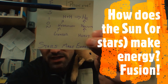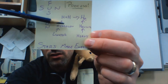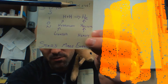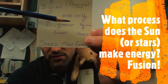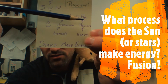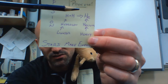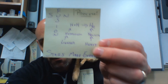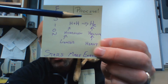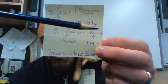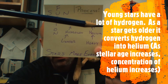Any questions that talk about what process forms energy in the Sun, or the process of lighter elements turning into heavier elements — that's fusion. This is the star fuel and helium is the product. Anything with 'process' and 'the Sun' or 'process' and 'a star' — that's what they're talking about. As stars get older they'll have more helium and less hydrogen; younger stars have more hydrogen and less helium.